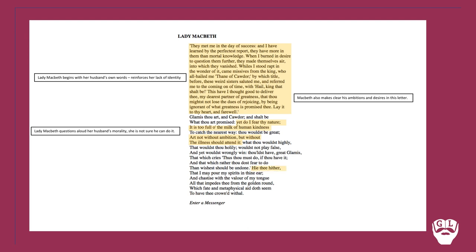Moving further on, she says 'Hie thee hither, that I may pour my spirits in thine ear, and chastise with the valour of my tongue all that impedes thee from the golden round.' Lady Macbeth is saying she will take it upon herself to motivate Macbeth — to 'pour my spirits,' almost poisoning and corrupting him. 'Chastise' means to tell off or punish him, and 'the golden round' is a reference to the crown — she is the one who will effectively coach him into becoming King of Scotland.